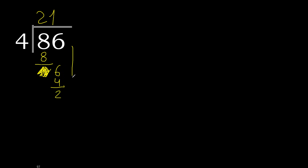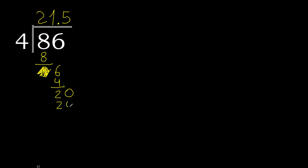Next, there is no more number, therefore we complete with 0 and add a decimal point. Bring down 20. 4 multiplied by 5 is 20, which is not greater. 20 minus 20 equals 0.